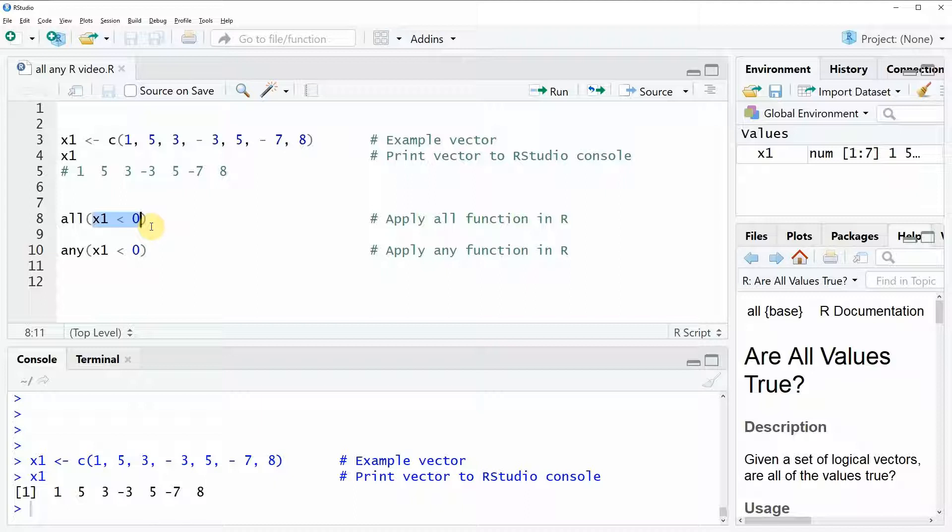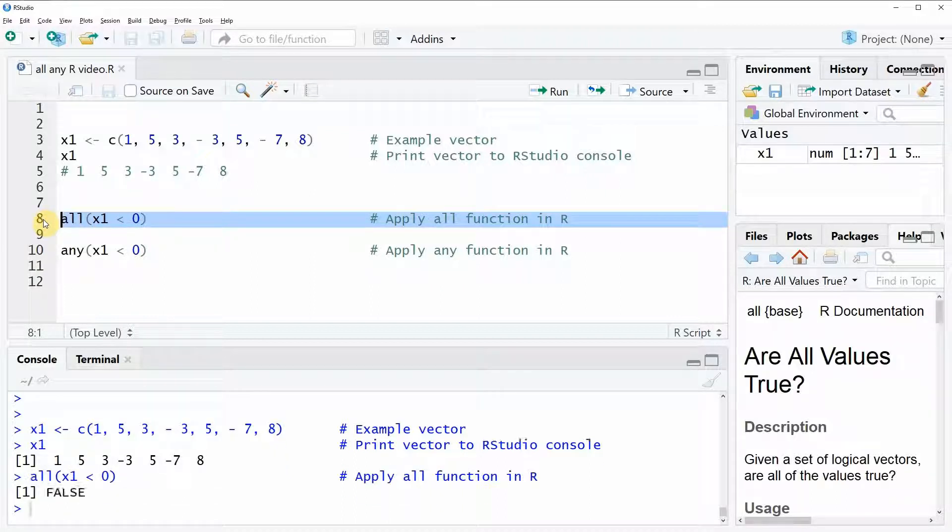So in this case we would like to know if all our values in x1 are below zero. Now if we run this line of code you can see that in the RStudio console the value false is returned and that means that not all values in our vector are below zero.